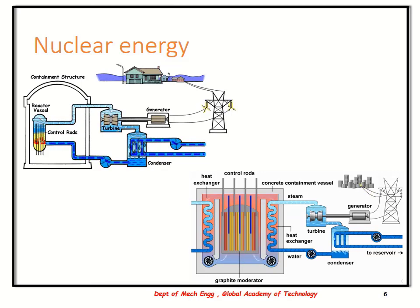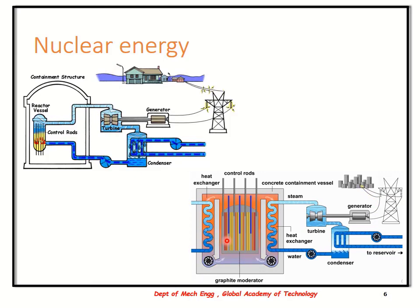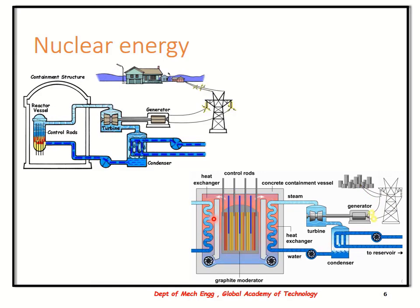The next form of energy extraction involves utilizing nuclear reaction. For this, the nuclear fuel, typically uranium, is in the form of small pellets similar to a bullet, and is placed inside the reactor vessel. The nuclear reaction — specifically the fission reaction — is then initiated. The fission reaction involves liberation of heat, and this liberation of heat is utilized to extract energy.